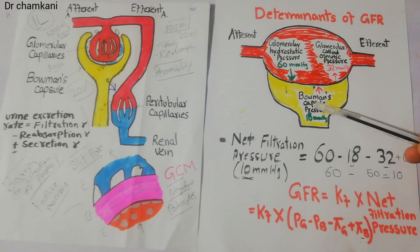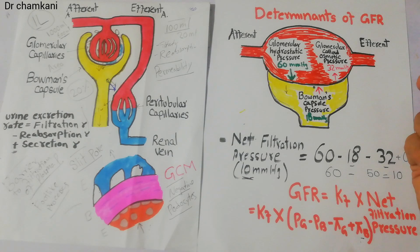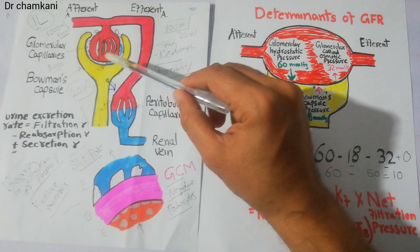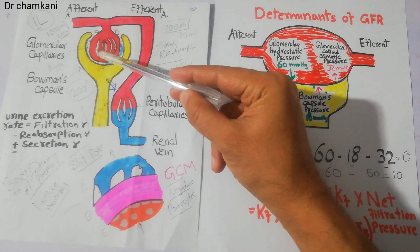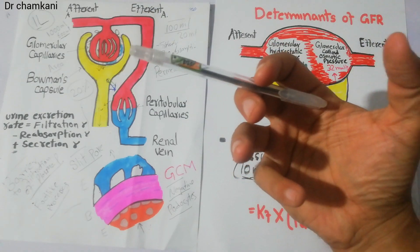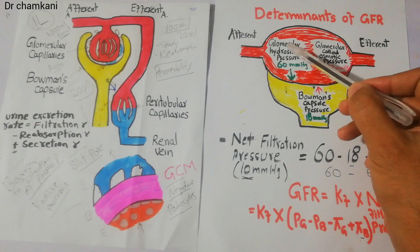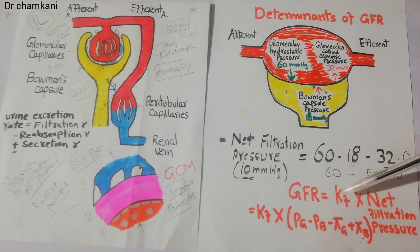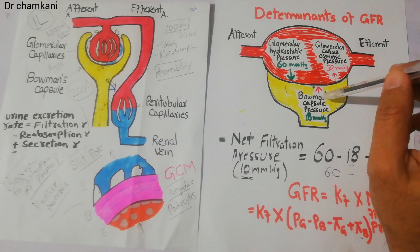Today we are going to talk about Bowman's capsule hydrostatic pressure because this is also a very important determinant of the GFR. We have started discussing the determinants of GFR under the urine formation process. Filtration is the first step in urine formation and occurs at the glomerular capillary membrane. The forces determining GFR include glomerular hydrostatic pressure, glomerular colloid osmotic pressure, Bowman's capsule hydrostatic pressure, and glomerular capillary filtration coefficient KF, which we discussed in our last lecture in detail.